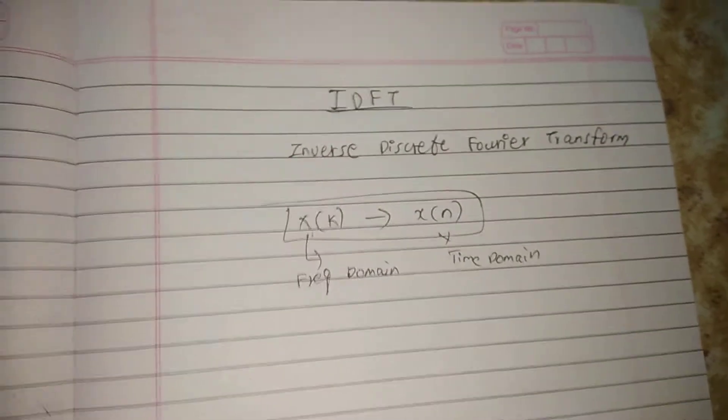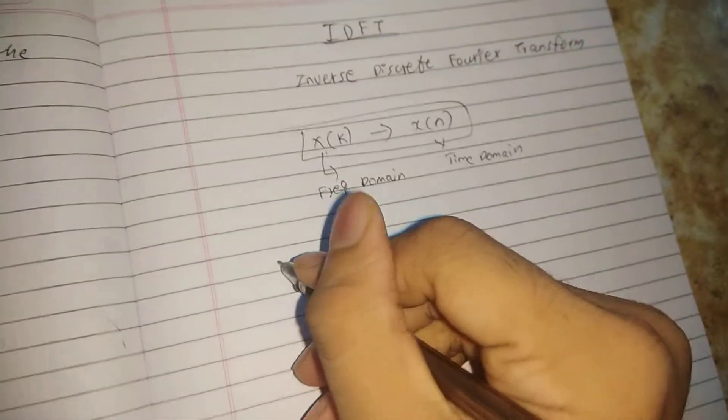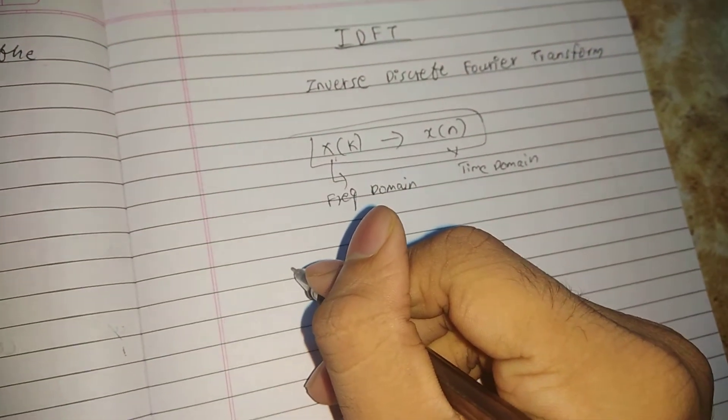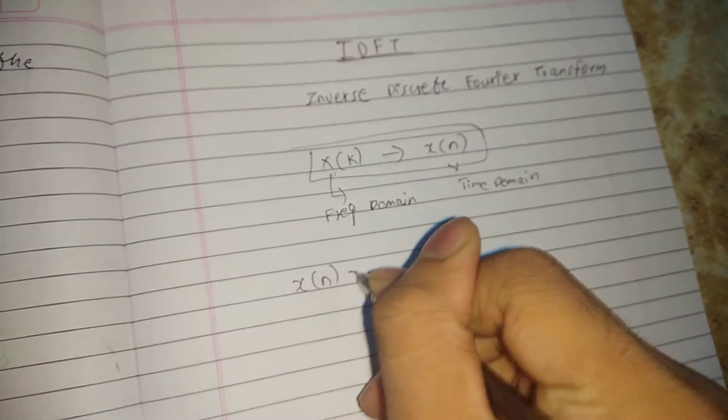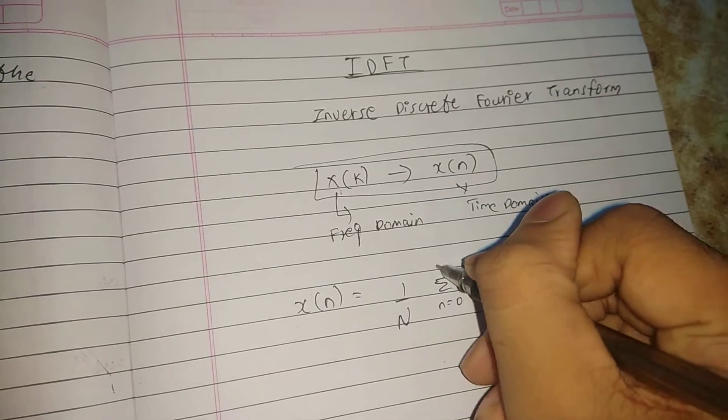The formula for inverse discrete Fourier transform is: x(n) equals 1 by N, summation from n equals 0 to N minus 1.